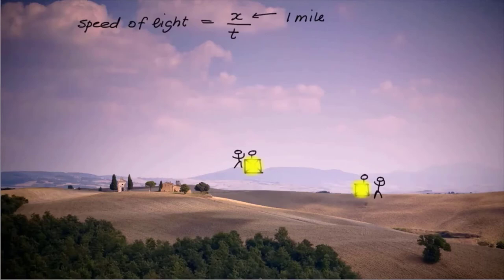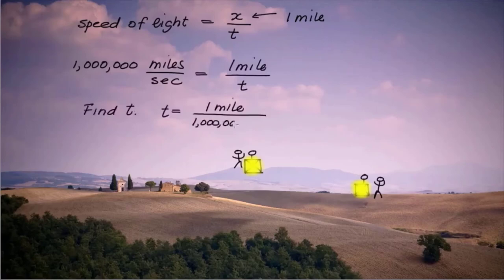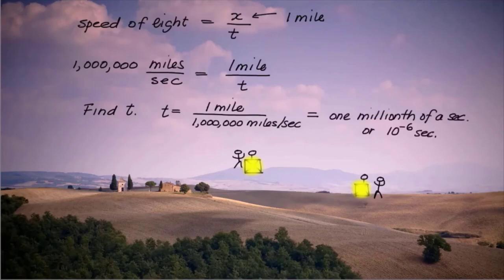For example, let's estimate the speed of light to be one million miles per second. For Galileo to detect the speed of that light over one mile, he would need to measure a millionth of a second — not an easy task, particularly given that these were human shutter openers, and the human response time is roughly a quarter of a second.